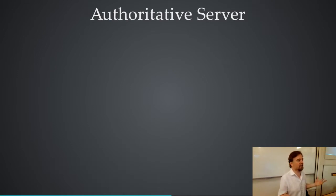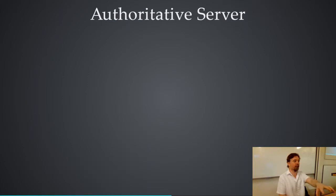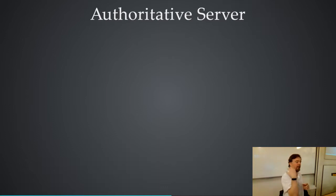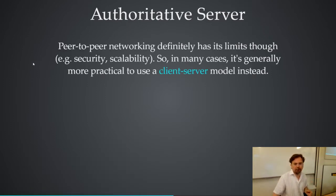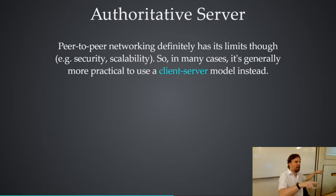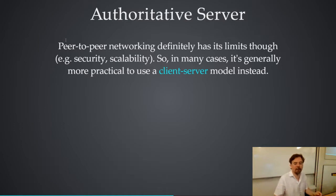The general solution, which has been popular for quite a long time, is to have authoritative servers — client-server rather than peer-to-peer. The idea is that you have one machine that is the one source of truth. That machine decides what really happens, and all the other machines have delayed, approximate versions. The server decides who wins, who gets killed when somebody gets shot, and the other machines just get told what to do.